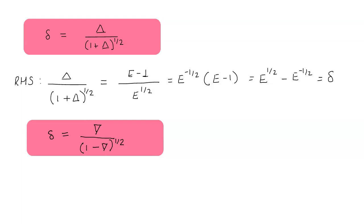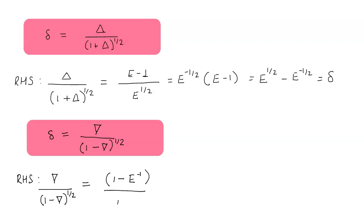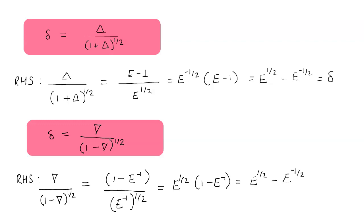Moving on to the relation between the central difference operator and the backward difference operator. Starting with the right-hand side, we convert ∇ in terms of the shift operator: ∇ = 1 - E^(-1), and (1 - ∇) = E^(-1), whole raised to power 1/2. Taking the denominator to the numerator gives E^(1/2)(1 - E^(-1)), which opens to E^(1/2) - E^(-1/2), again equal to our central difference operator delta.